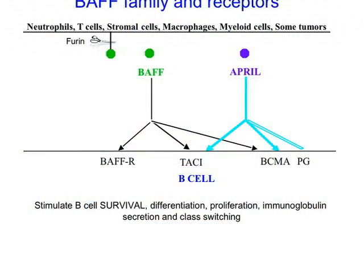When the receptors are ligated on the B cell surface, this results in various functions of the B cell, including B cell survival, some aspects of differentiation, and immunoglobulin secretion and class switching.